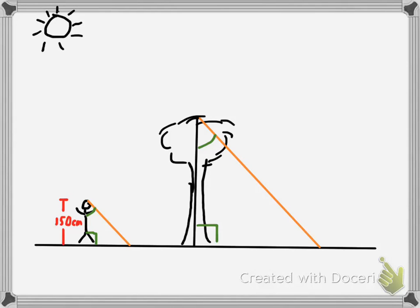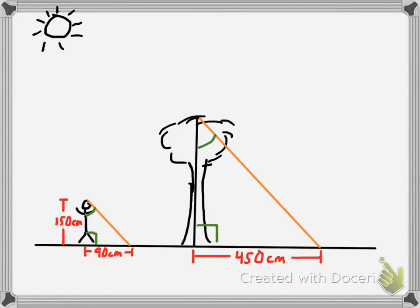Here are some measurements somebody could actually make. The person knows their height — let's say that's 150 centimeters. They measure their shadow, the length from where they're standing to the tip of the sun ray, and their shadow is 90 centimeters. Another measurement they could easily make is the length of the tree's shadow. Suppose they measure that and find it is 450 centimeters.